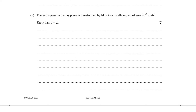On part B, the unit square in the XY plane is transformed by M onto a parallelogram of area ½d² square units. Show that d is equal to 2.